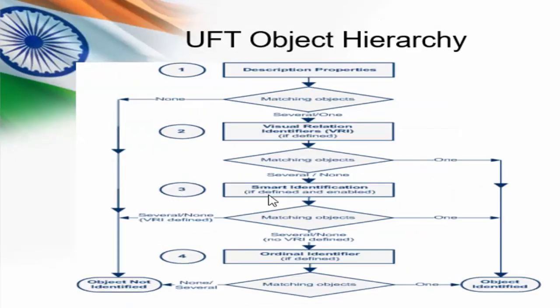Let's consider another scenario. If it is unable to identify the unique object even after using smart identification, then it will go to the next level — the ordinal identifier. By combining the learned description and the ordinal identifier, it tries to identify the unique object. If it is still unable to identify, then UFT fails the run session and displays an error message saying that UFT cannot identify the object.